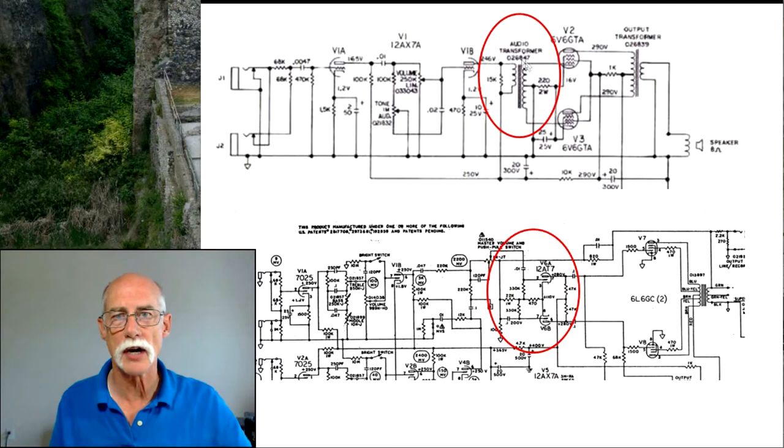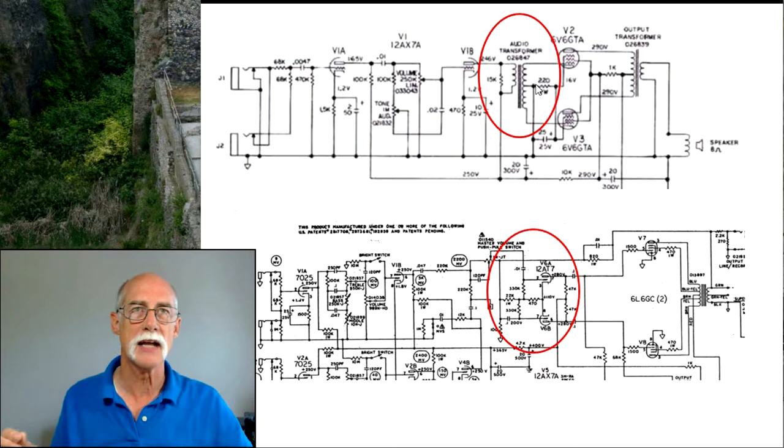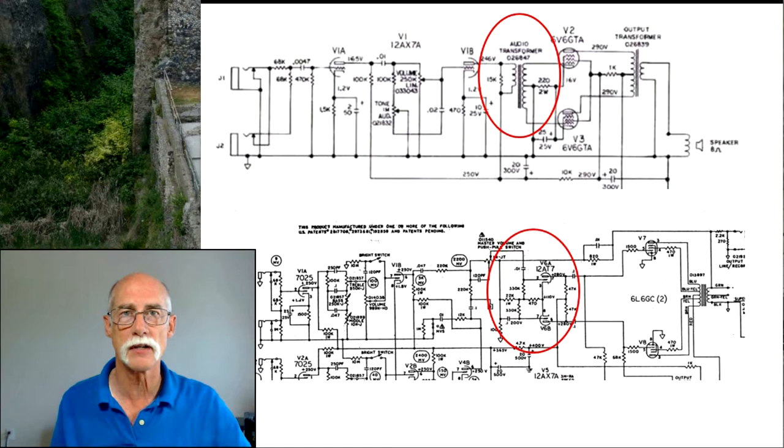In a Music Master based amp they use a transformer to do the phase splitting. Signal comes in on the primary, the secondary has a center tap which then goes to ground and then each of the phases are inverted from one another and then it goes out to a power transformer.